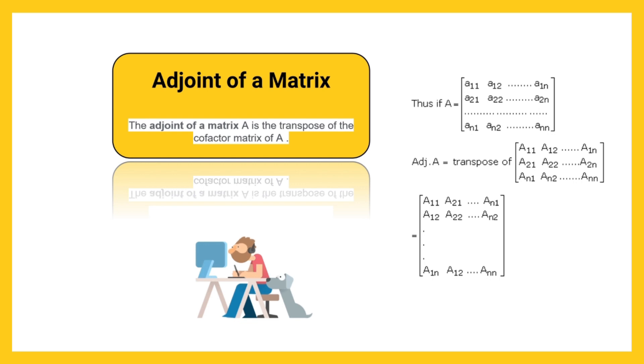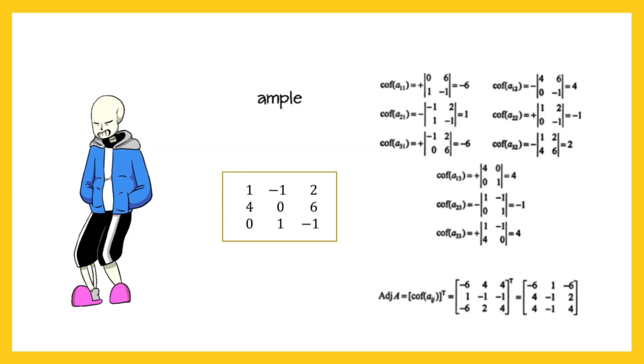Adjoint of the matrix A is denoted by adj A. Example: find the adjoint of the matrix as given in the picture.